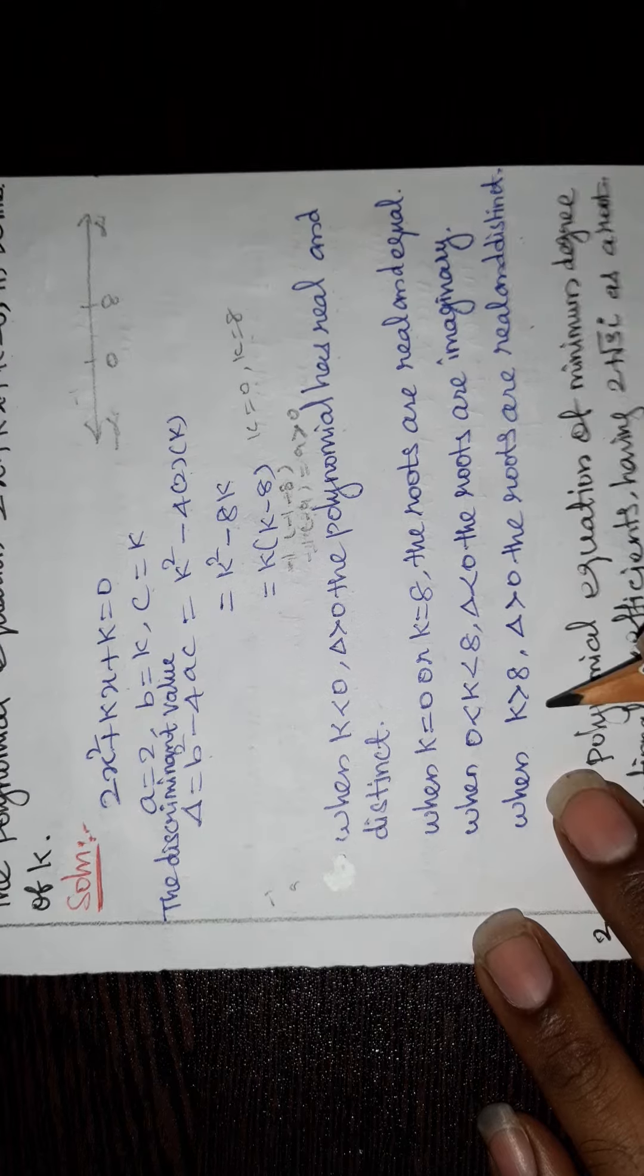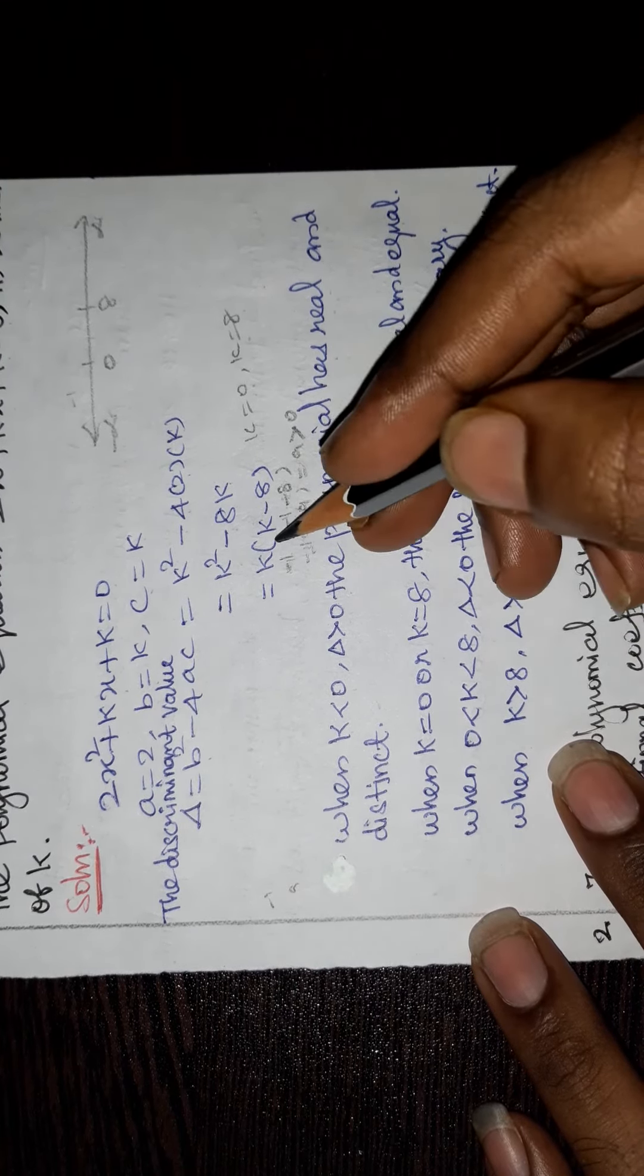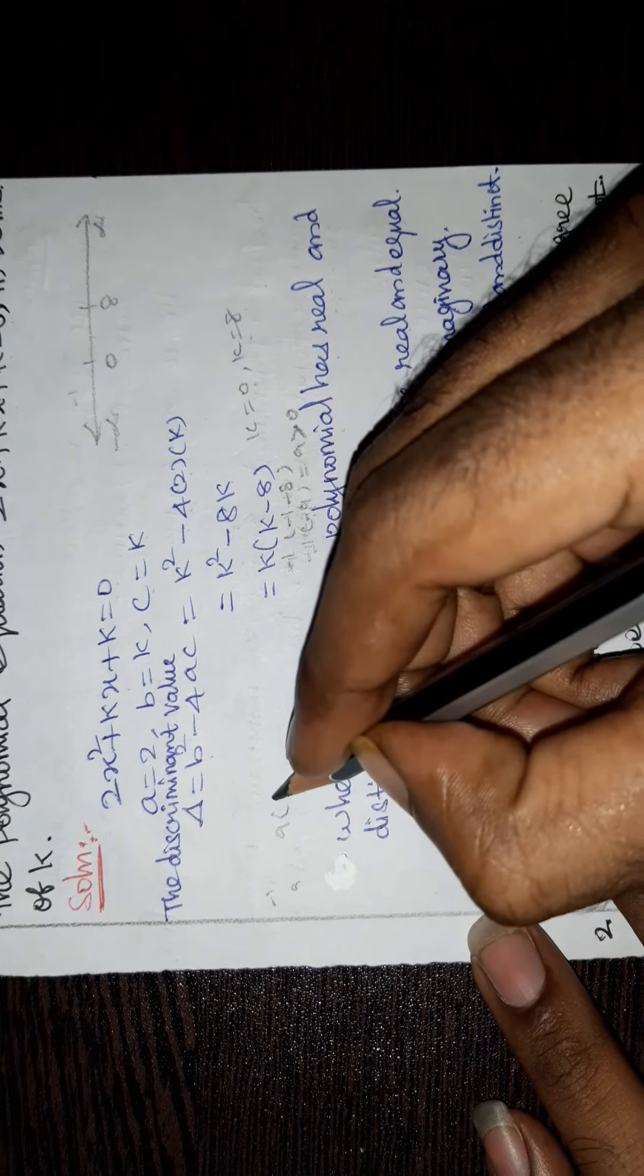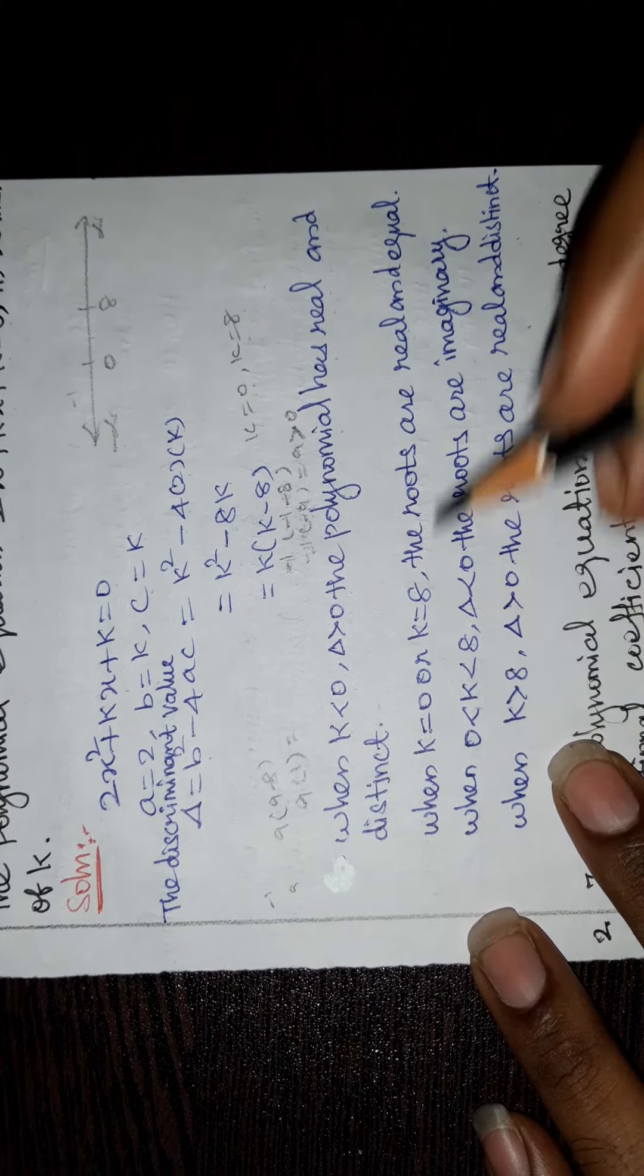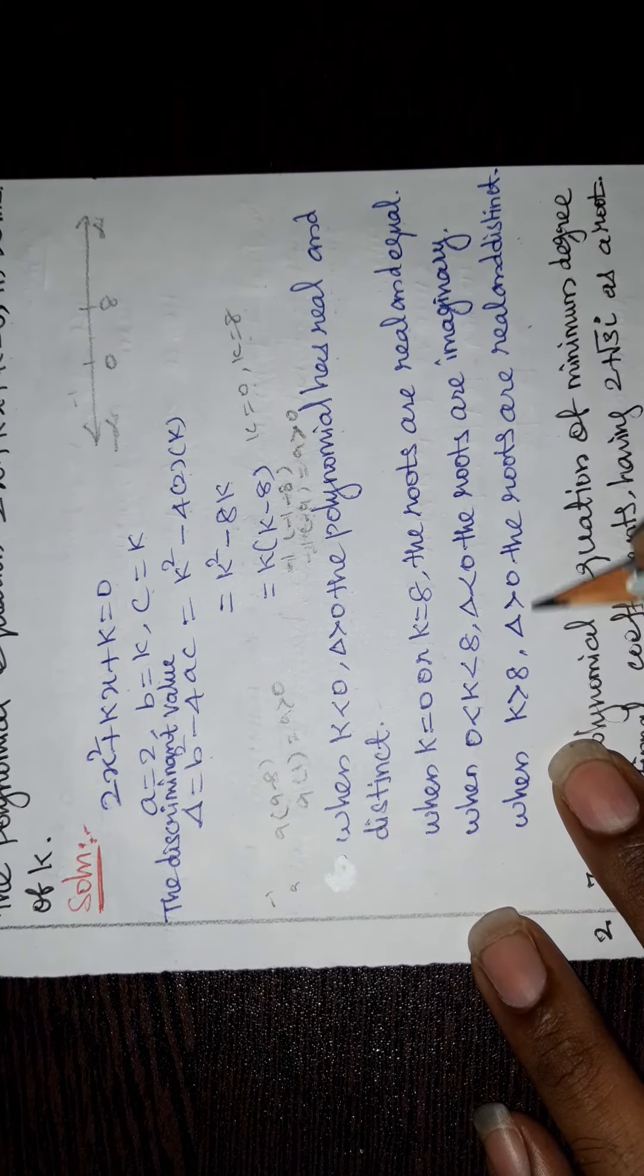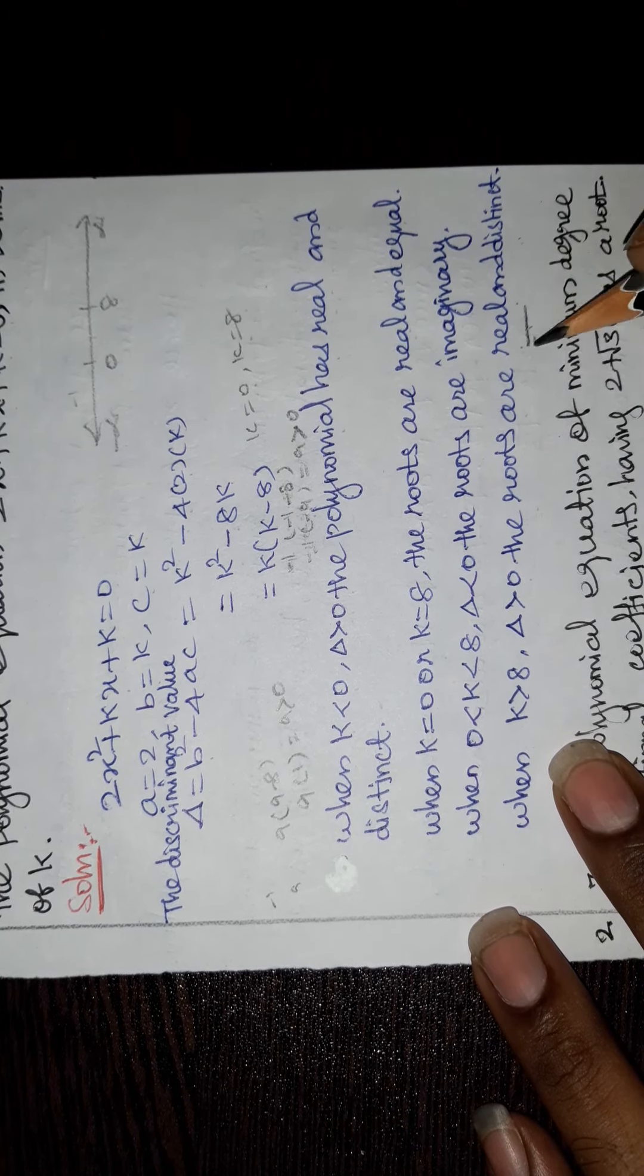Next, when k > 8. Above 8 means we substitute 9. So 9(9 - 8) = 9(1). So this is also positive. Δ > 0, the roots are real and distinct.